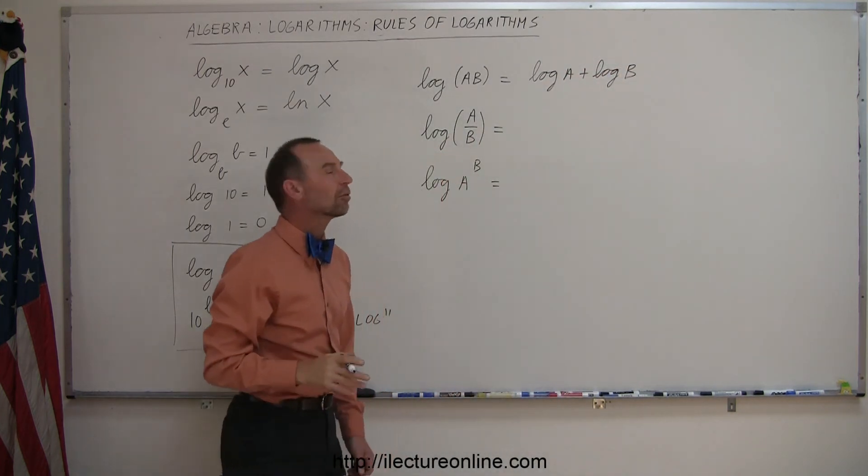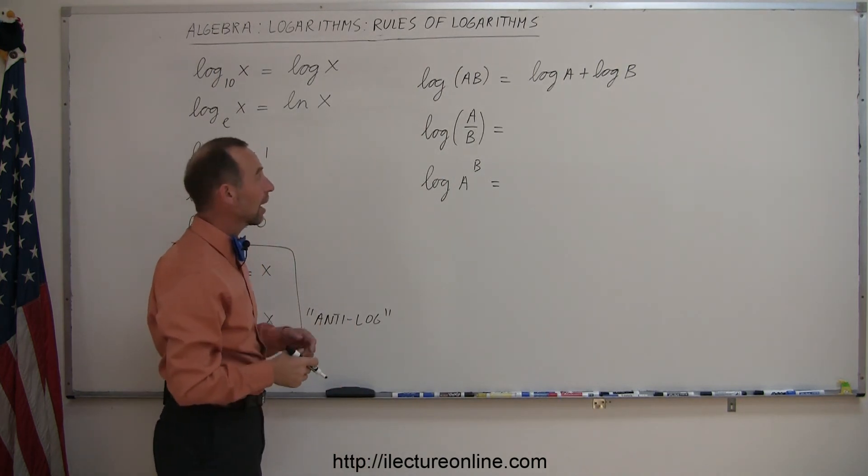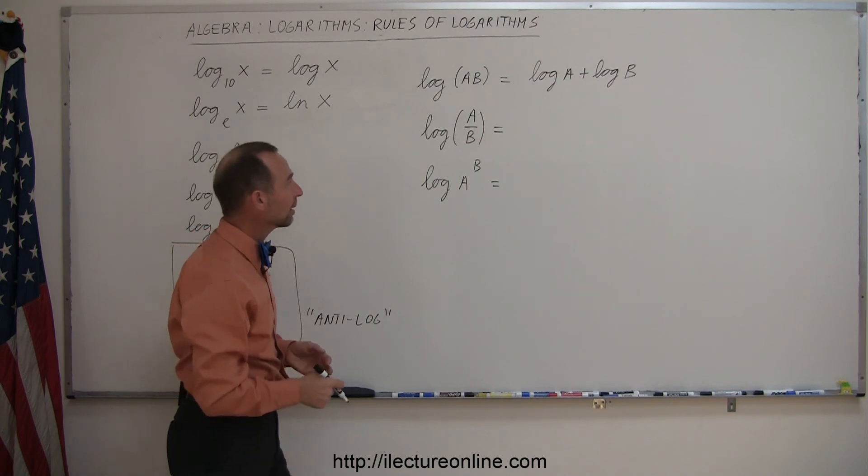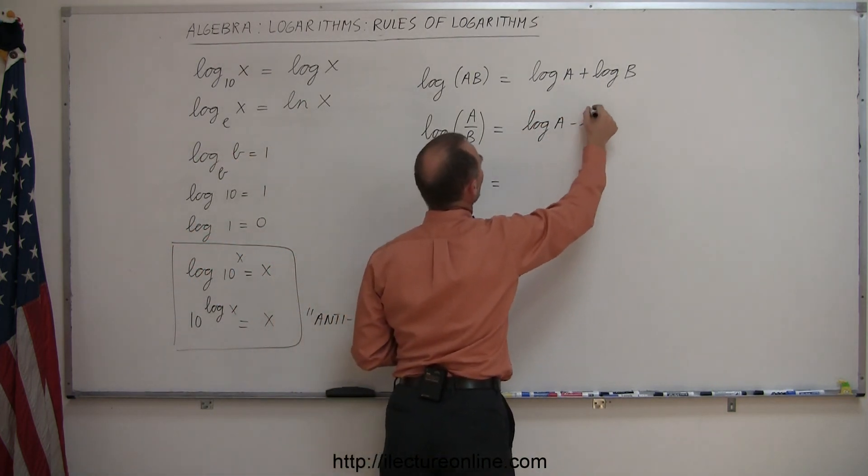And this used to be used before the days of calculators to make a product into a sum of things. All right, when we have the log of a divided by b, that can be written as the log of a minus the log of b.